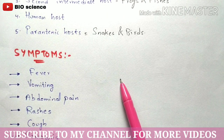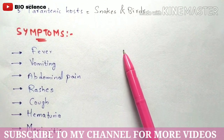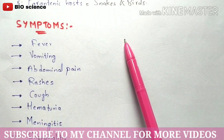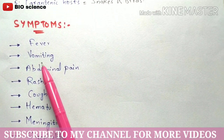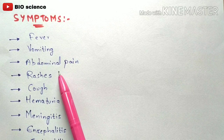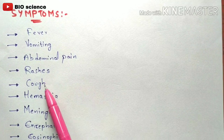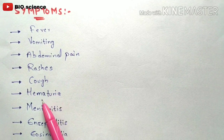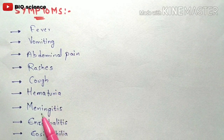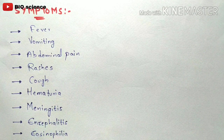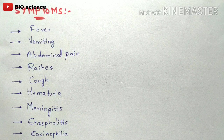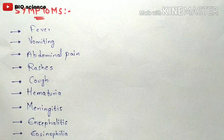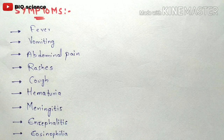The symptoms of a person infected with Gnathostomiasis include fever, vomiting, abdominal pain, rashes, cough, hematuria, meningitis, encephalitis, and eosinophilia. These are the types of symptoms seen in a person infected with Gnathostomiasis.